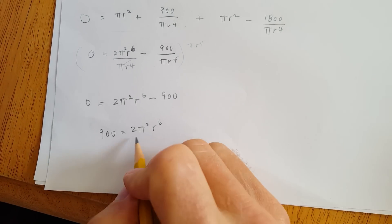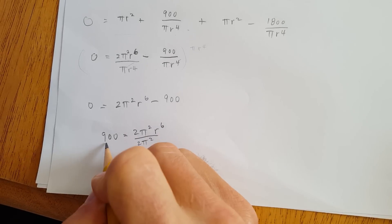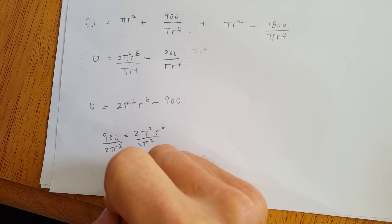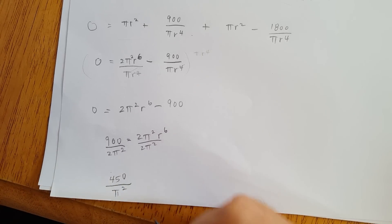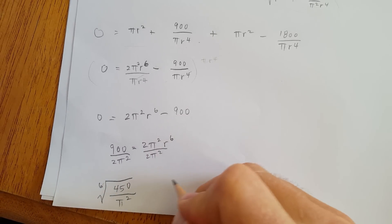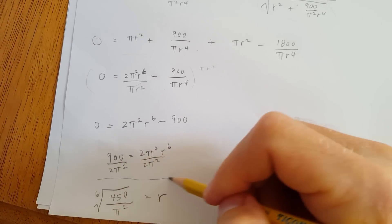Now we're almost home. I can bring the 900 over because now I have them separated. So: 2 pi squared r to the sixth equals 900. Divide both sides by 2 pi squared to isolate r to the sixth. We can simplify this to 450 over pi squared. Then taking the sixth root of both sides gives us r. And there you have it — not so bad, huh? I hope you enjoyed that problem. I'm going to post more because I got a lot of feedback on Facebook. I have a lot of other problems that caught me off guard and those are the interesting thinking problems. I hope you enjoyed and I'll see you next time.